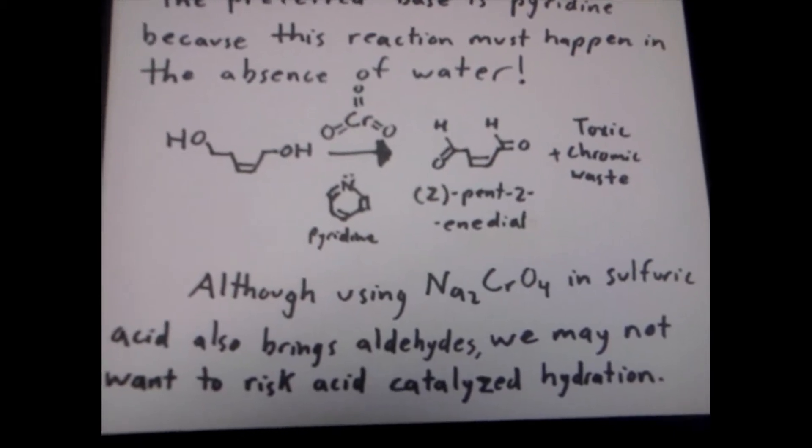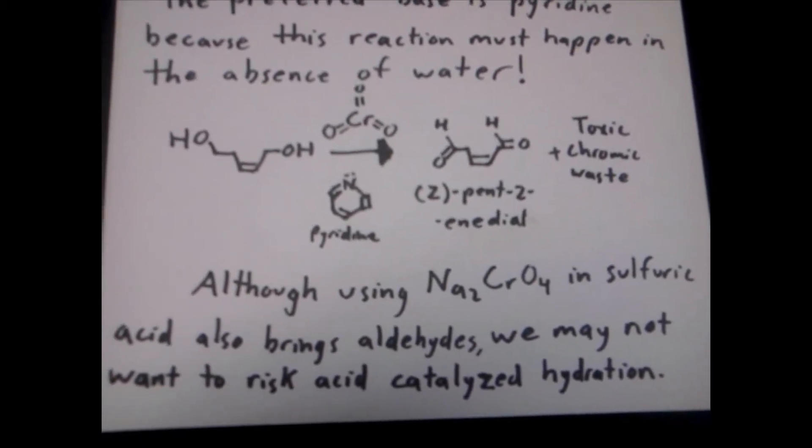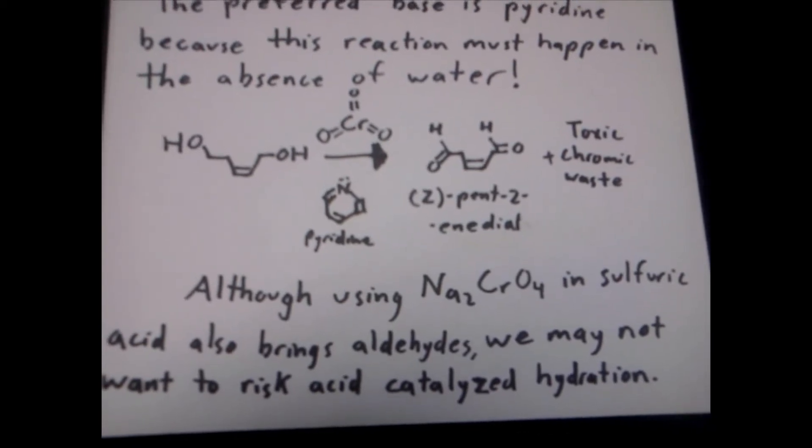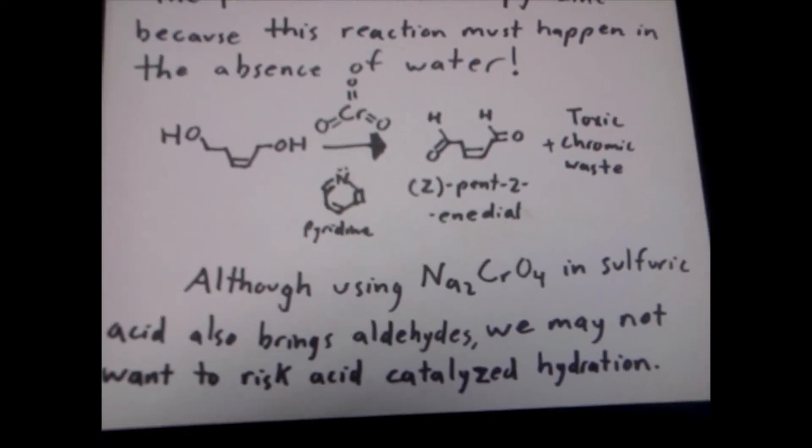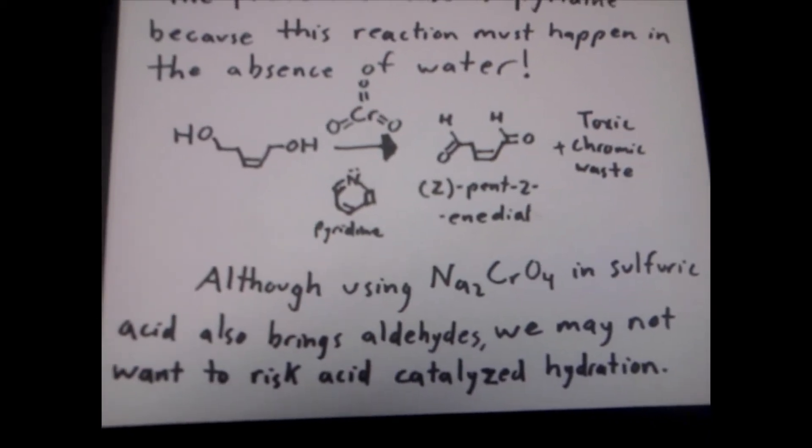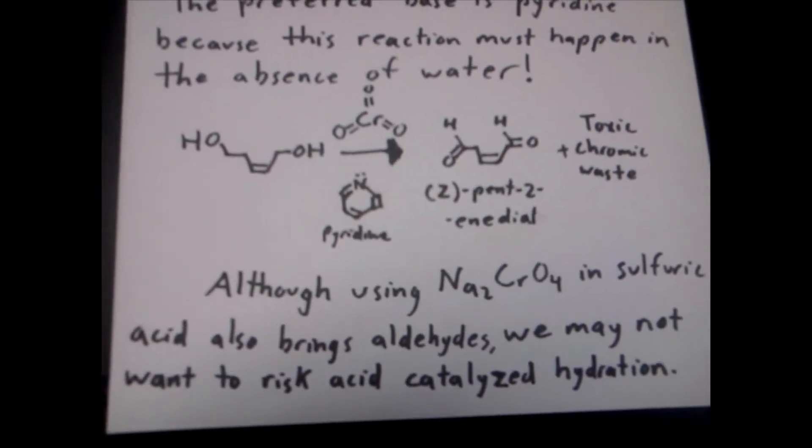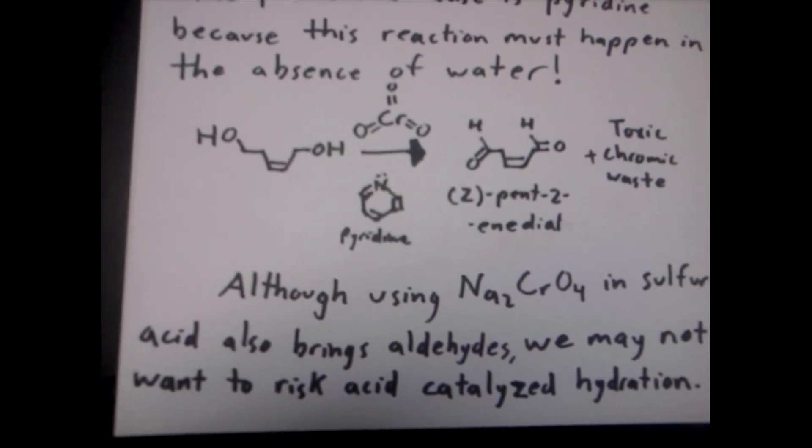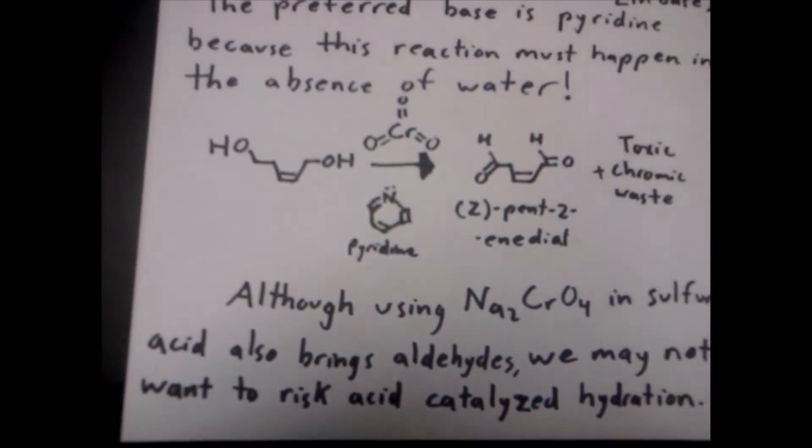A lot of professors will say there's a second way to make aldehydes using a chromium reagent, which is a sodium chromate in sulfuric acid. And they say that brings aldehydes. But we might not want to risk the acid-catalyzed hydration of the double bond or risk getting a carboxylic acid instead of the respective aldehydes that we want.